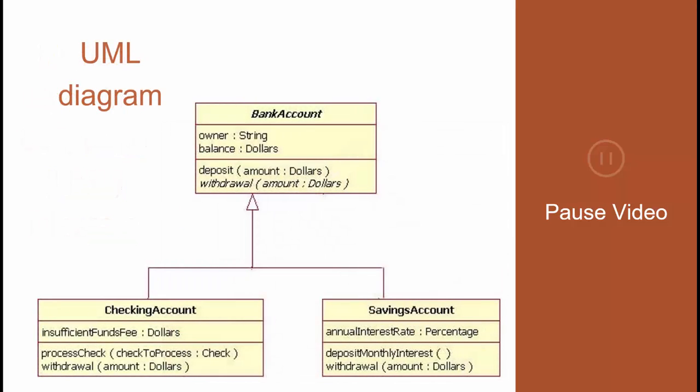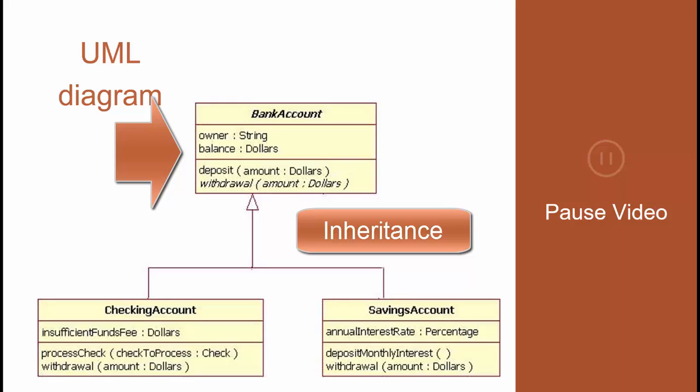This next diagram shows a bank account class definition. You can see a basic bank account object diagram at the top, and two more specialized accounts below. This is a good example of inheritance, where the checking account and the savings account objects inherit everything about the main bank account, and then add more special features of their own.